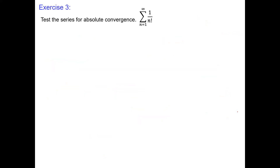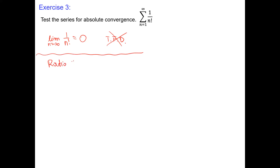Exercise number three: test the series 1/n! for convergence. This contains only one expression — factorial — but the ratio test is still helpful. The test for divergence doesn't work here because the limit of 1/n! is zero, and if the limit is zero we know nothing — test for divergence is not applicable. Since we can eliminate factorials easily by creating the ratio, let's use the ratio test.